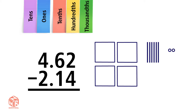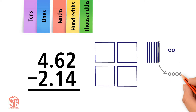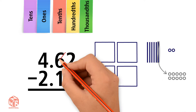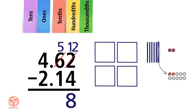Are there enough hundredths to subtract 4 from 2? No, so we have to regroup. We regroup 1 tenth to make 10 hundredths. Now we're left with 5 tenths and 12 hundredths. Subtract the hundredths: 12 minus 4 equals 8, so we write 8 in the hundredths column.